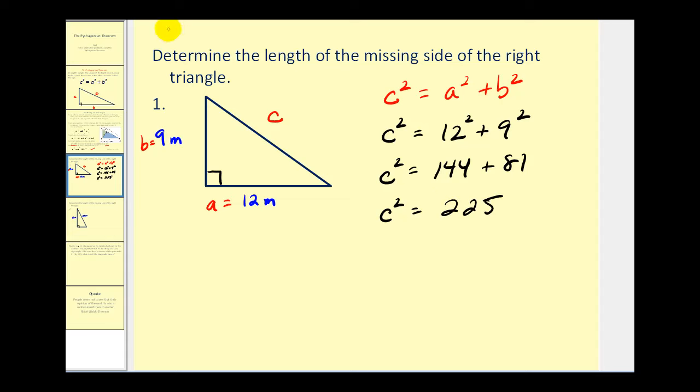And now to find C we can take the square root of both sides. Now we're only going to take the principal square root, or the positive square root here, because we know C would be a length and this length can't be negative. 225 is a perfect square, so we have C equals 15, in this case meters. That's the length of the missing side. Let's go ahead and try another one.